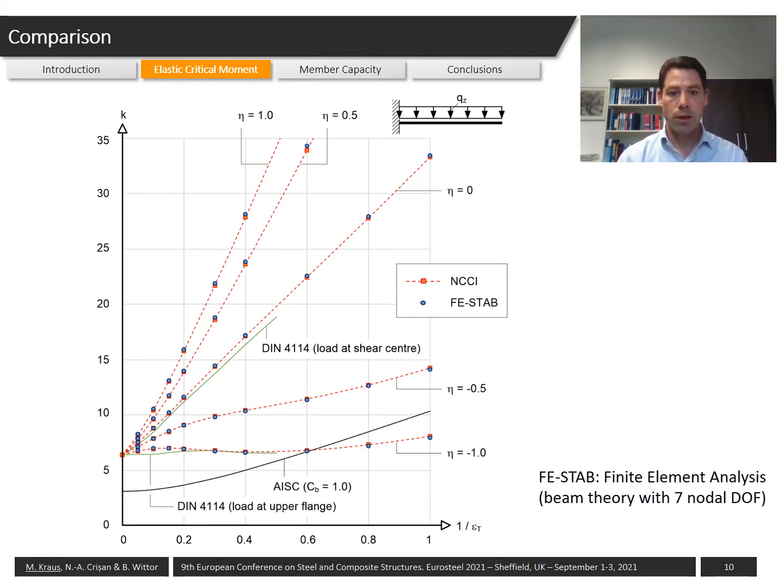However, the approach of the American standard where only one factor is being defined for all structural systems has to then represent things on safe side, which is the case until a member characteristic 1/εT of approximately 0.6.